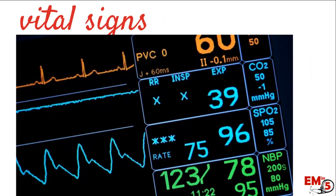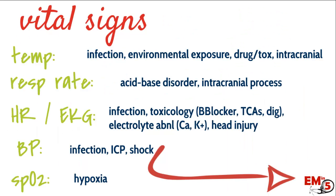The next thing that will help you is looking at their vital signs, and each vital sign can help build your differential. Take their temperature — you're looking for signs of infection, environmental exposure like hypothermia or heat stroke, and signs of drug toxicity. Their respiratory rate can give information about an acid-base disorder or an intracranial process. Look at their heart rate and EKG for signs of toxicology, infection, electrolyte abnormalities, or head injury. Their blood pressure can tell you if they're in shock, and make sure you check oxygen saturation.